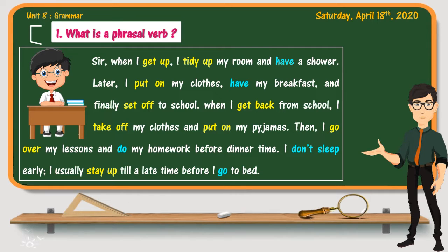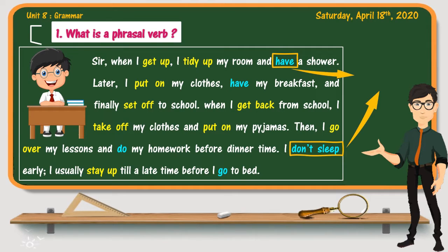And to talk about activities or actions, we normally use verbs. So let's have a look at the verbs used. The verbs in blue color — such as have, don't sleep, go, and to — are common or regular verbs you already know and use.